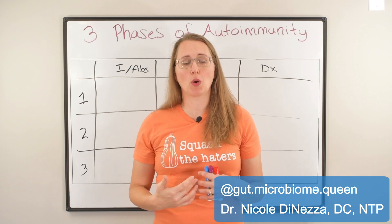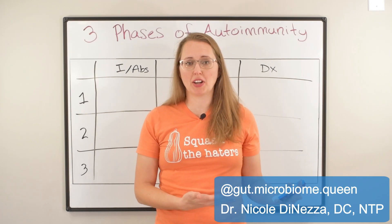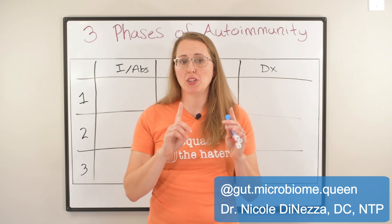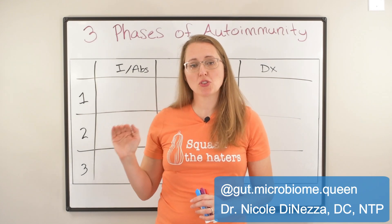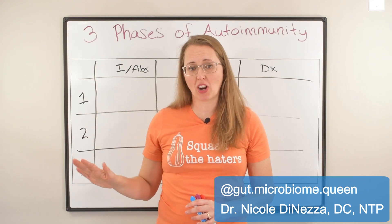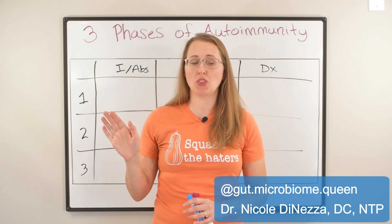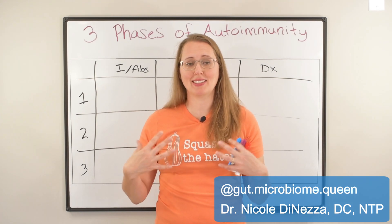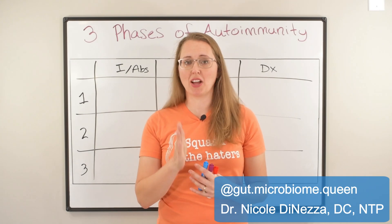This could be relevant for an autoimmune disease that you already know that you have. For example, if you've already been told that you have Hashimoto's, you could learn something about yourself through this video. But most importantly, I share this information because it's possible to capture an autoimmune disease early in phase one or two and either slow the progression or halt it in its tracks so that it doesn't progress to the overt clinical disease. And I say that from firsthand experience — I've done it with my own body.